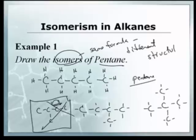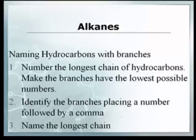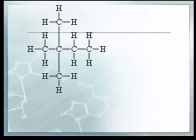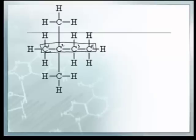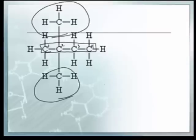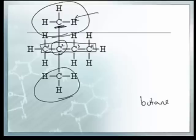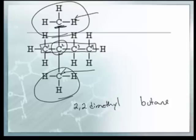We'll learn how to name isomers. The rules: number the longest chain of carbons, make branches have the lowest possible numbers, identify the branches, and name the longest chain. The trick is finding the longest chain — sometimes it's not in a straight line. For example, the longest chain here is four carbons — one, two, three, four — so the last name is butane. On carbon number two I have a one-carbon branch, and another one-carbon branch, so we say 2,2-di...